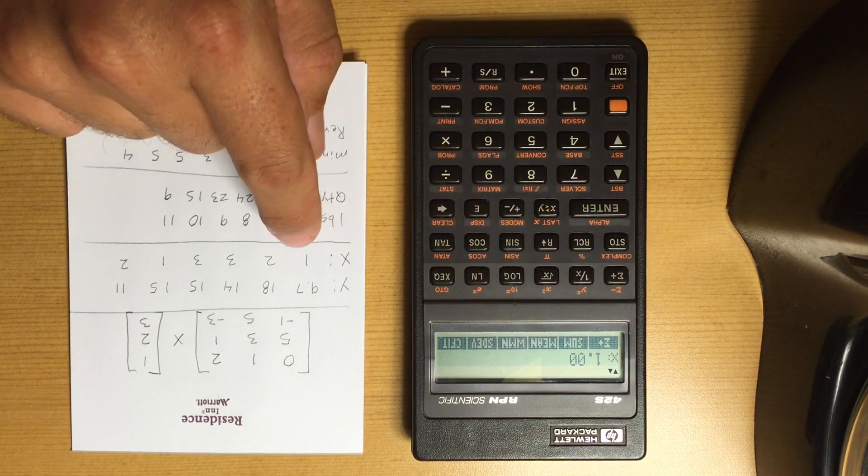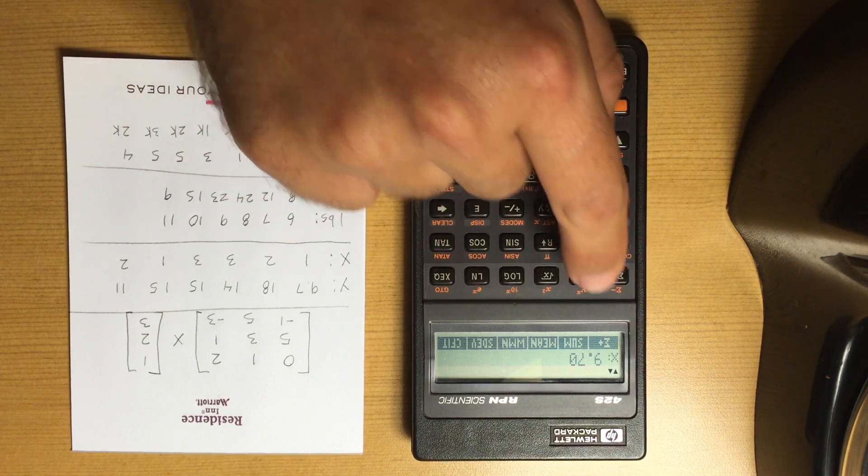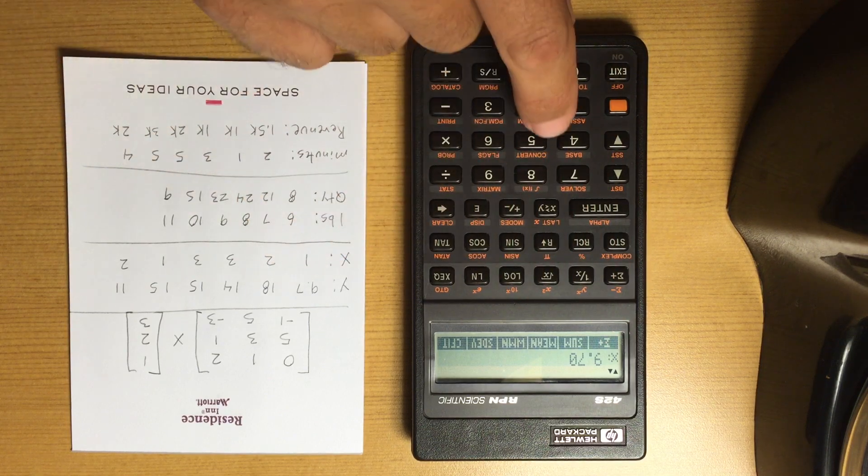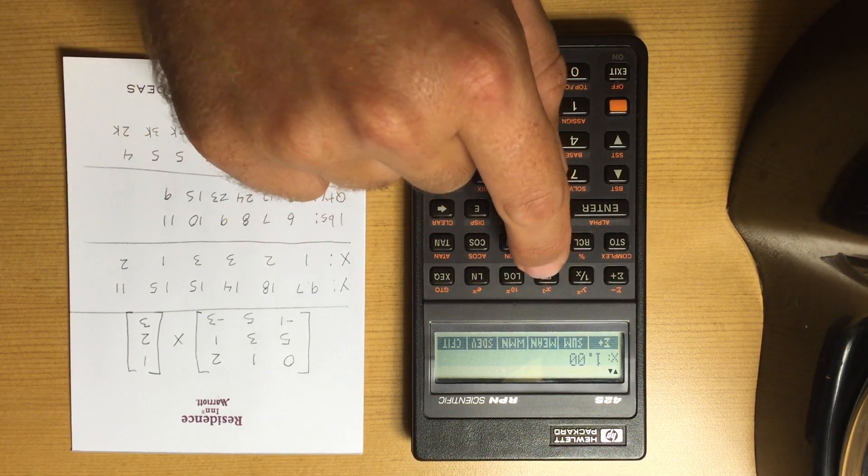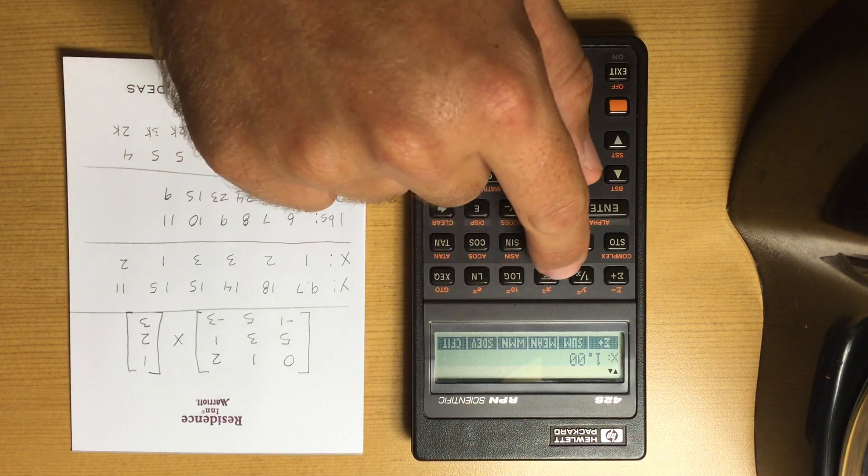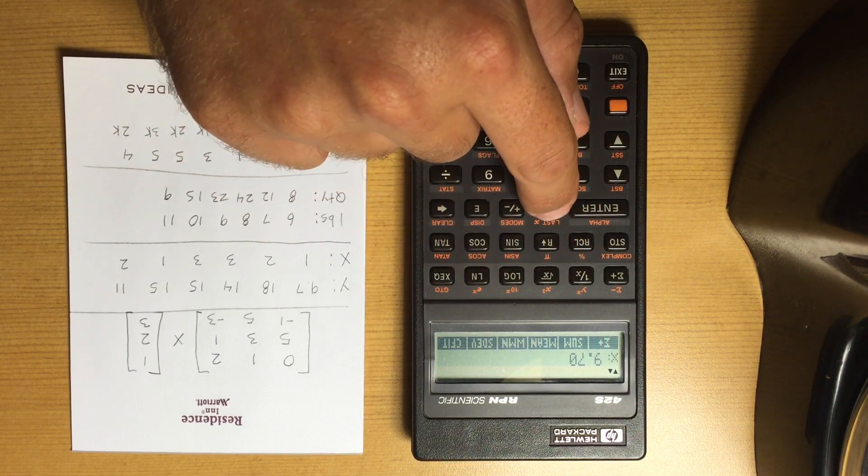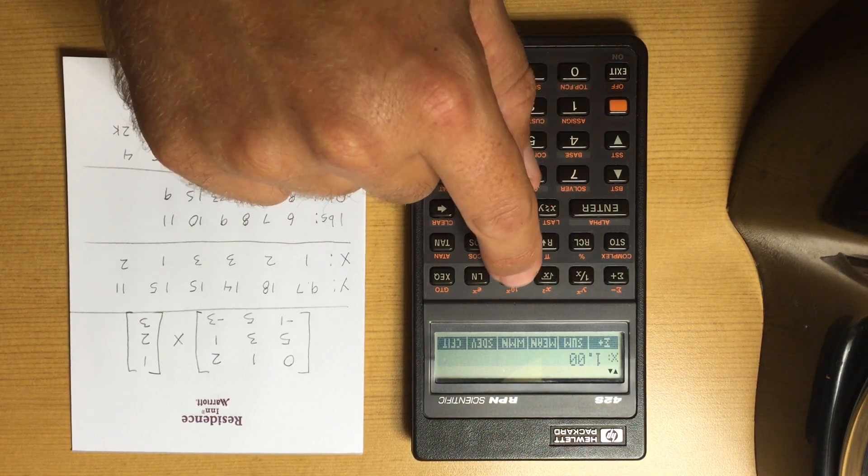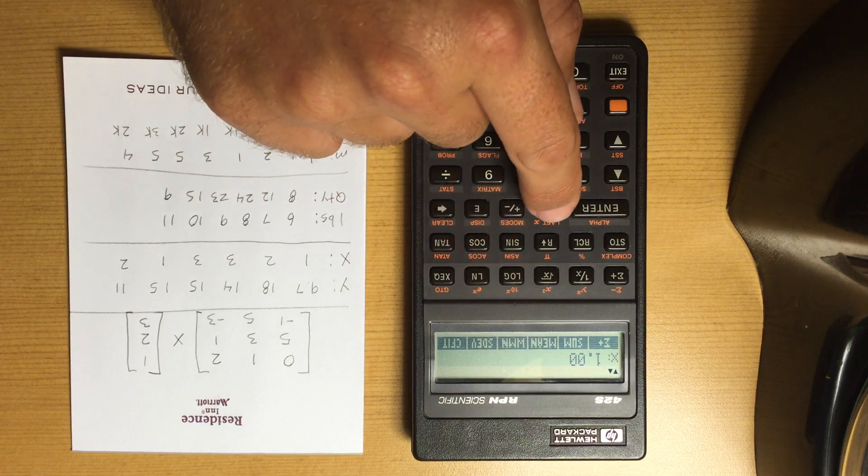My mean is going to be 1—I only have one value—and it's going to be 9.7. My weighted mean is also 1 because I only have one value.